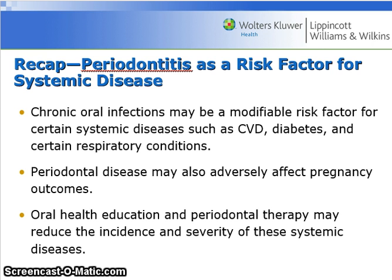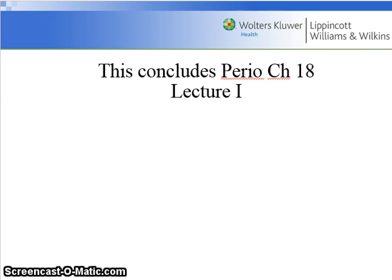Recap: periodontitis as a risk factor for systemic disease. Chronic oral infections may be a modifiable risk factor for certain systemic diseases such as cardiovascular disease, diabetes, and certain respiratory conditions. Periodontal disease may also adversely affect pregnancy outcomes. Oral health education and periodontal therapy may reduce the incidence and severity of these systemic diseases. This concludes Perio, Chapter 18, Lecture 1.